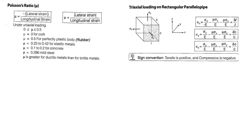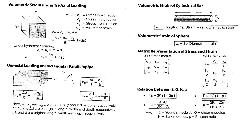The strain formula is: εx = σx/E − μ·(σy/E) − μ·(σz/E). The volumetric strain ev = 3σ/E·(1 − 2μ). This is a very easy and important formula.